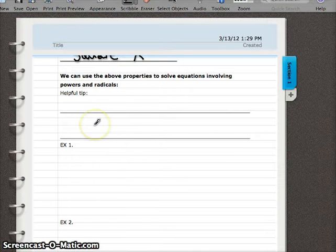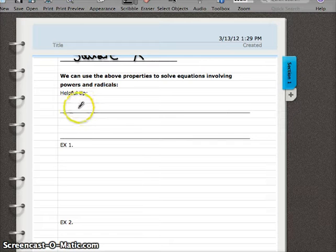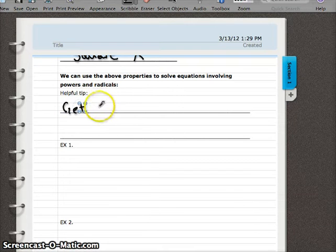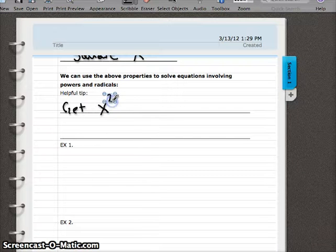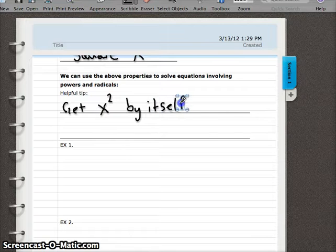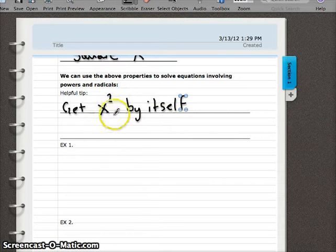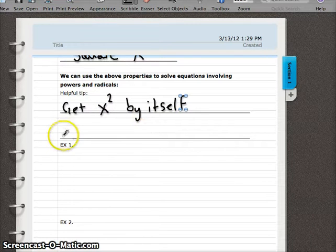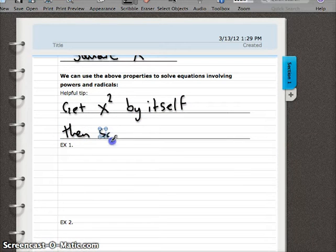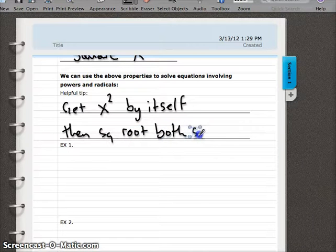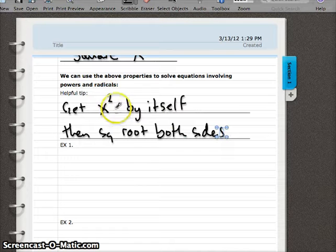So in order to solve equations with radicals, it's always nice to get that variable by itself first. In our case for today, we're going to be getting x squared by itself. So we want to undo all other things around it and get it all the way down so that x squared is the only thing on one side of the equation. Once we have that, then square root both sides. So in order to undo that square, that power of 2, and just get x, we're going to square root both sides.